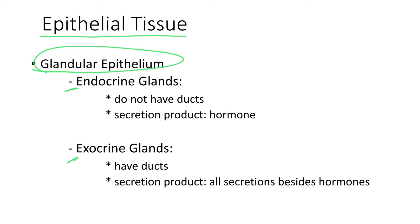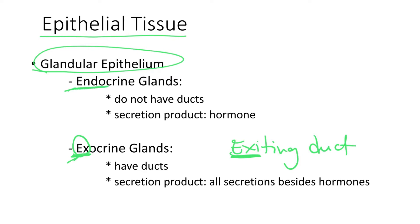One of the differences is that exocrine glands have an exiting duct. So you have exocrine with exiting duct. And when we look at the endocrine glands, we do not have ducts.